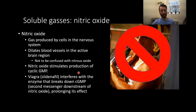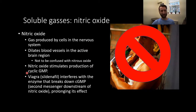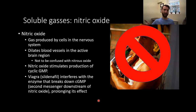Viagra interferes with an enzyme that breaks down cyclic GMP, which is that second messenger downstream of nitric oxide, and prolongs its effect. Basically, how Viagra works is it promotes vasodilation — it lets those blood vessels that dilate stay dilated longer because cyclic GMP is being allowed to stay active for longer. So nitric oxide accomplishes blood vessel dilation through its effect on cyclic GMP, and Viagra keeps the cyclic GMP active for longer, promoting longer duration vasodilation.